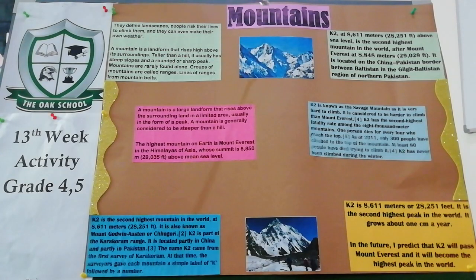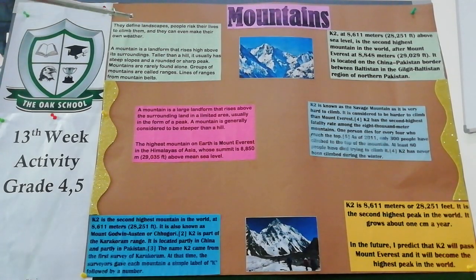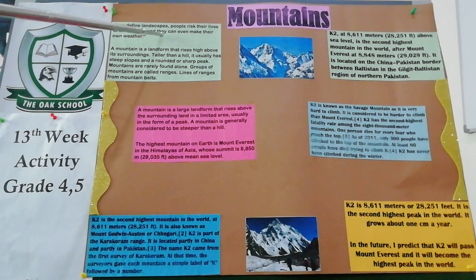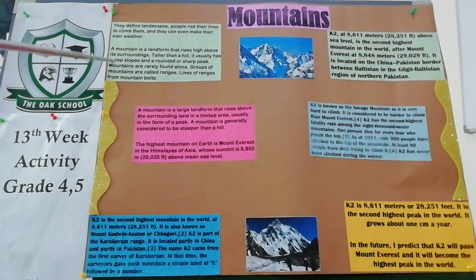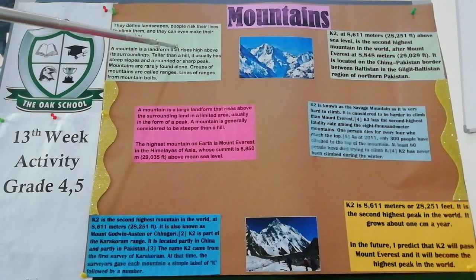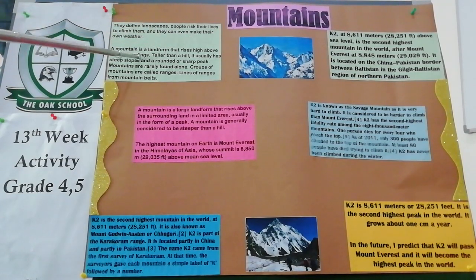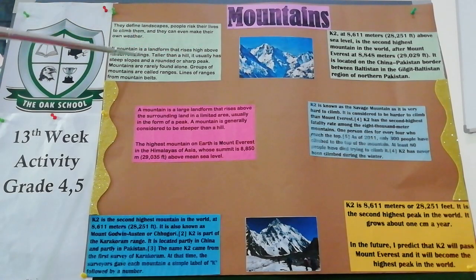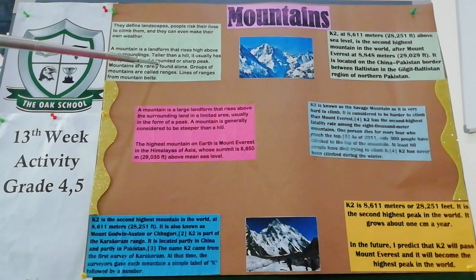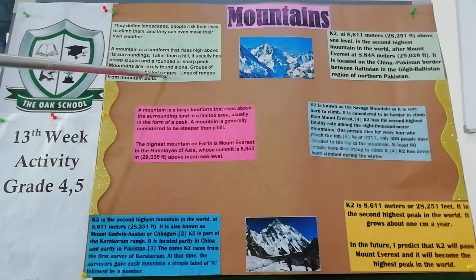Now come to a chart. Mountains — they define landscape. People risk their life to claim them and they can even make their own temperature. A mountain is a landform that rises high above its surroundings, taller than a hill. It usually has a slippery slope around the sharp peak. Mountains are rarely found alone. Groups of mountains are called ranges.